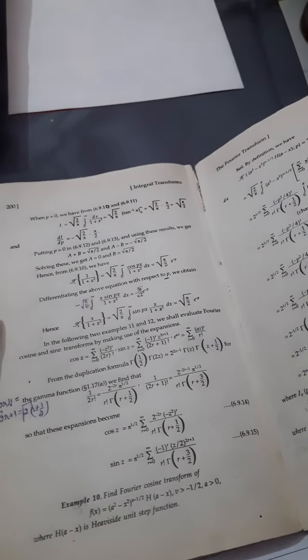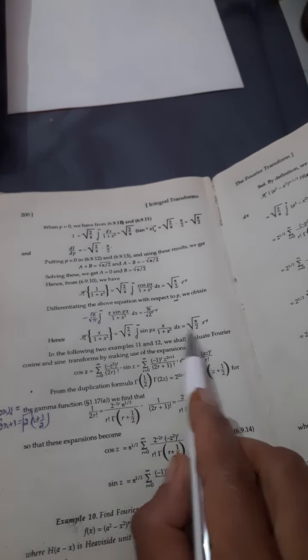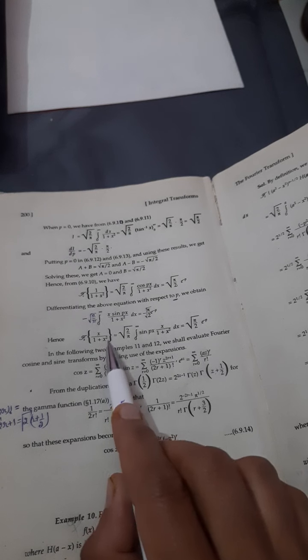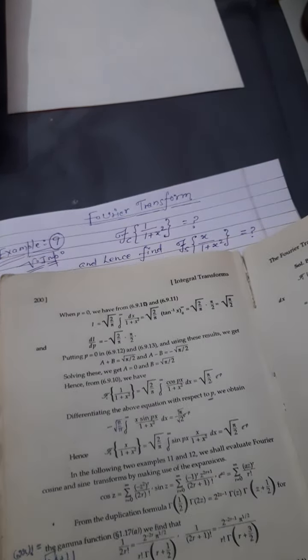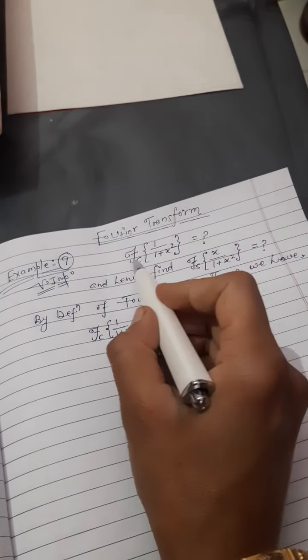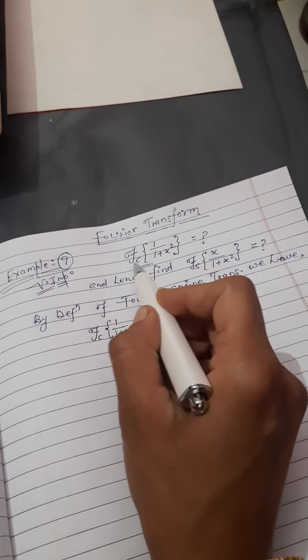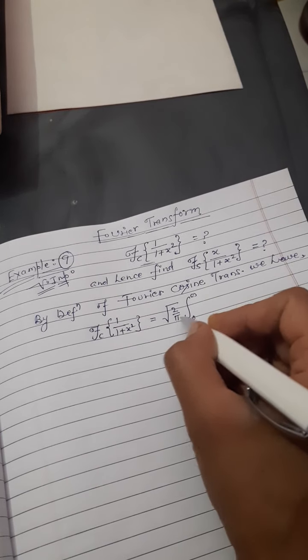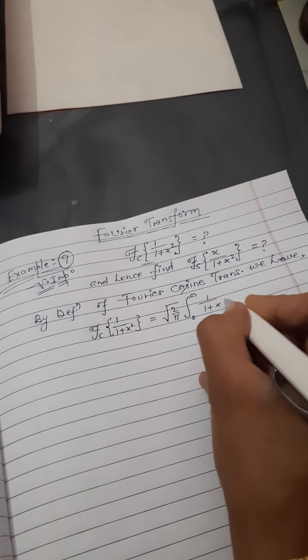This is the 9th example and this is the solution. This is the Fourier sine transform of x/(1+x²). By definition of Fourier cosine transform we have: under the root of 2/π, integral from 0 to infinity of f(x)·cos(px) dx, where f(x) = 1/(1+x²).